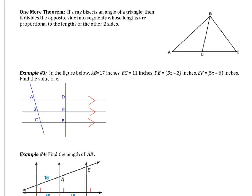Before looking at examples, we're going to learn the last theorem of this video: if a ray bisects an angle of a triangle, then it divides the opposite side into segments whose lengths are proportional to the lengths of the other two sides. So the bisected angle creates a proportion. The two sides are AB and BC. AB is connected to AD, and BC is connected to DC. The whole side AB over the part it's connected to (AD) equals the whole side BC over the part it's connected to (DC).